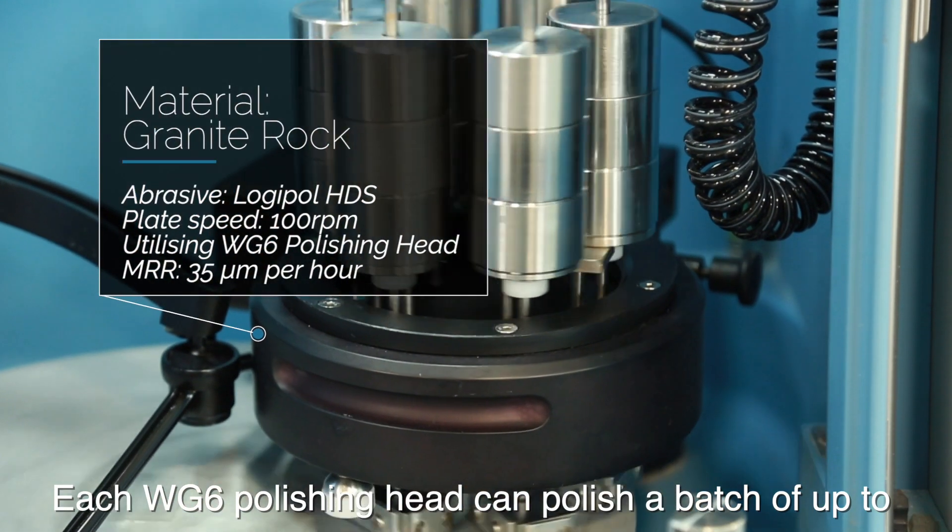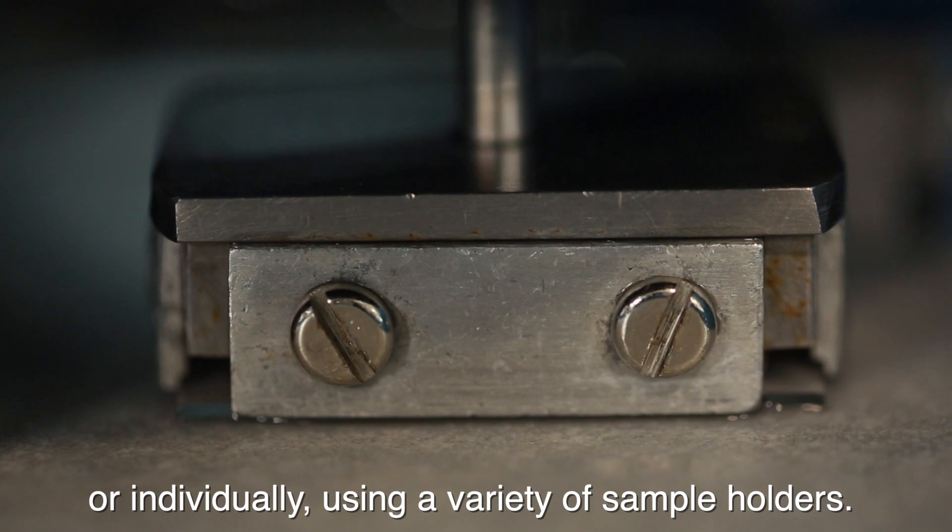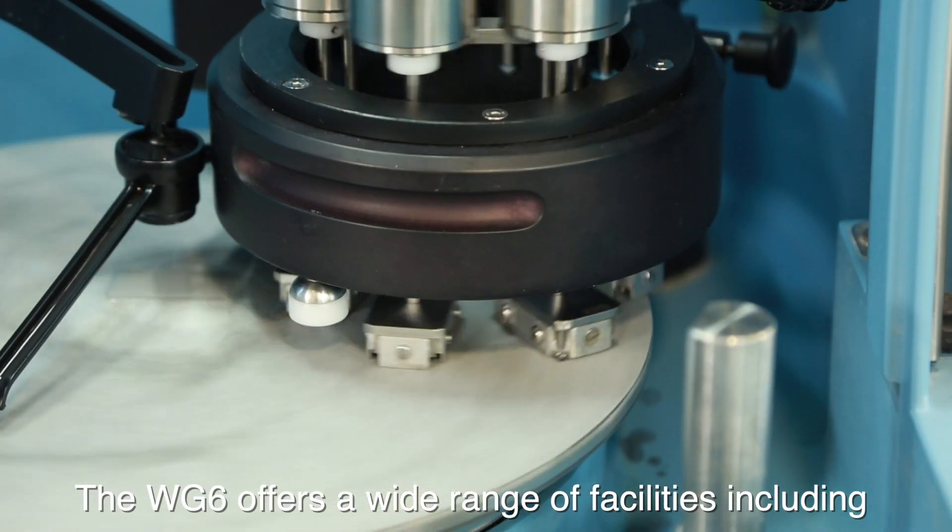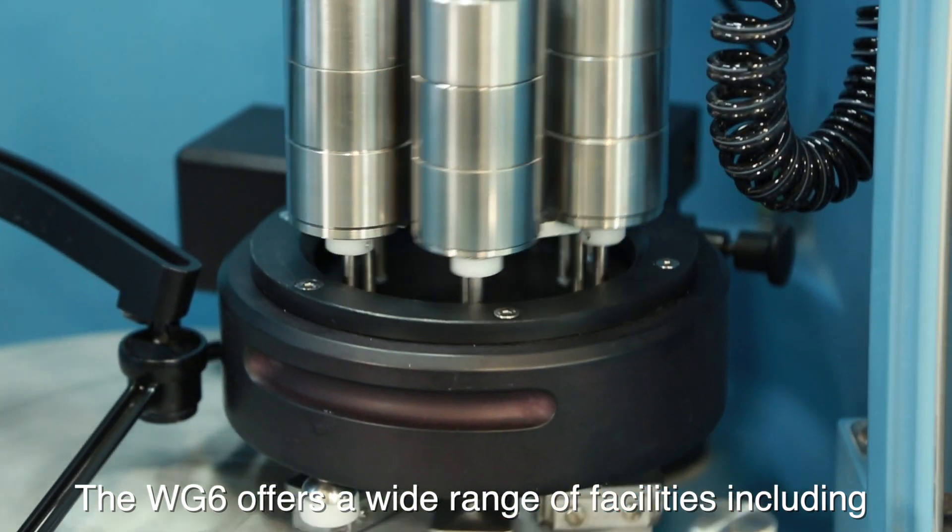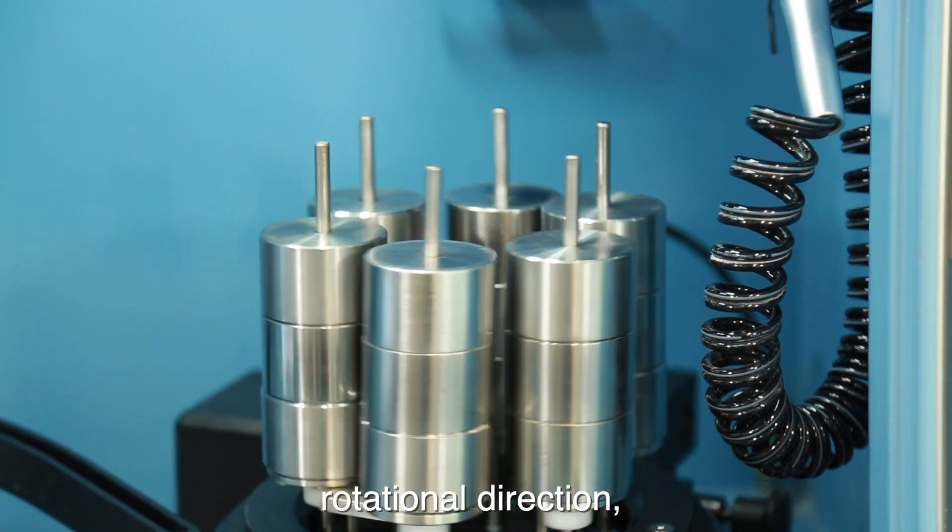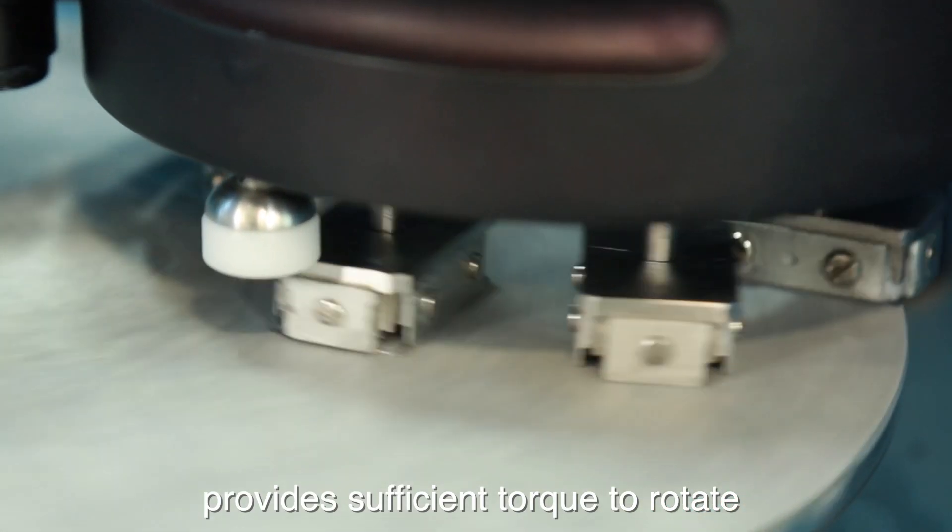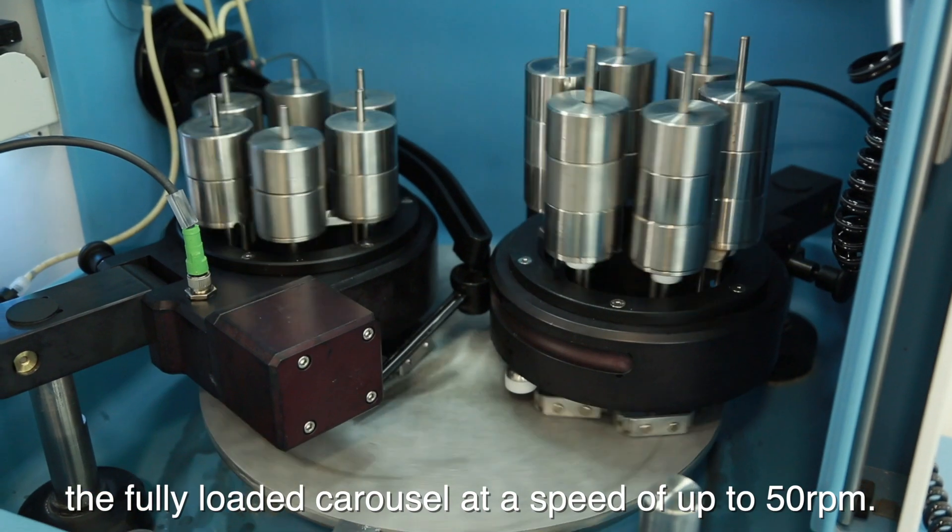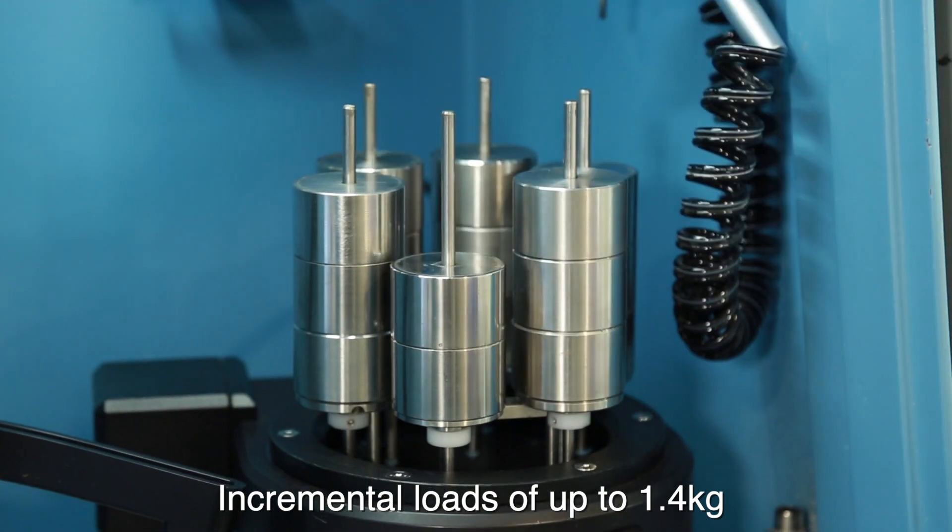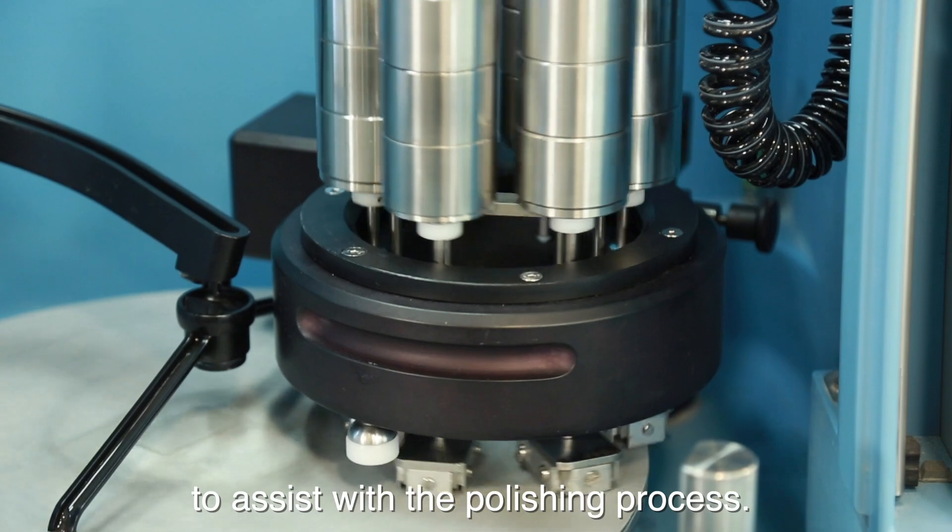Each WG-6 polishing head can polish a batch of up to six samples at one time, or individually using a variety of sample holders. The WG-6 offers a wide range of facilities including variable and carousel speed, rotational direction and the powerful low voltage motor provides sufficient torque to rotate the fully loaded carousel at a speed of up to 50 rpm. Incremental loads of up to 1.4 kg may be placed on each individual drive rod to assist with the polishing process.